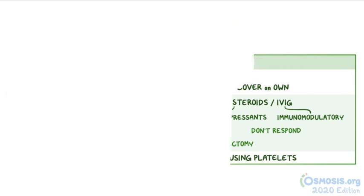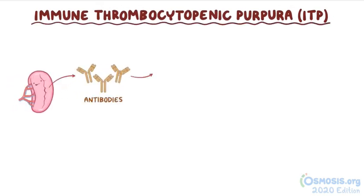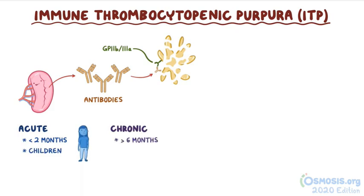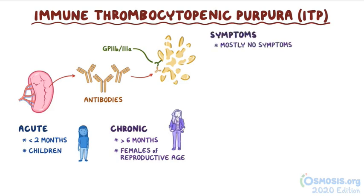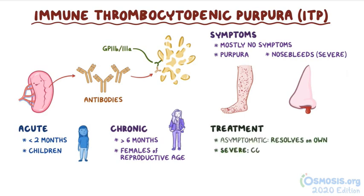As a quick recap, ITP is a condition where the spleen produces IgG autoantibodies against the platelet receptor GP2b3a, which leads to destruction of platelets. Acute ITP lasts less than two months and usually affects children; chronic ITP lasts more than six months and usually affects females of reproductive age. Most of the time there are no symptoms, but individuals with ITP can have purpura or even nosebleeds in severe cases. Asymptomatic ITP generally resolves on its own, but severe cases are treated with corticosteroids or intravenous immunoglobulin.